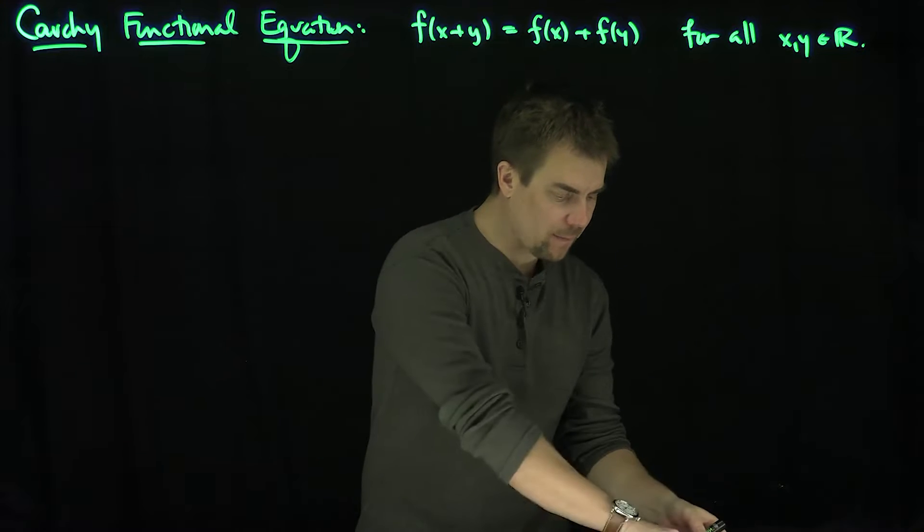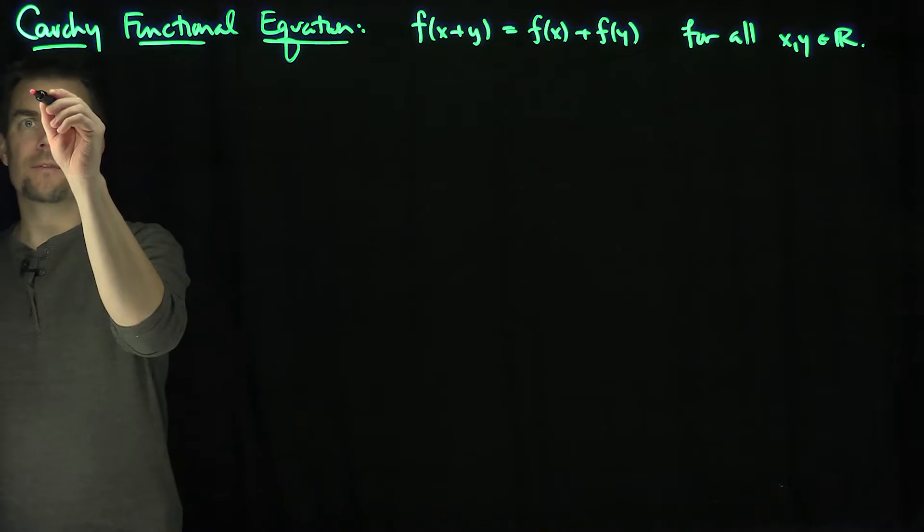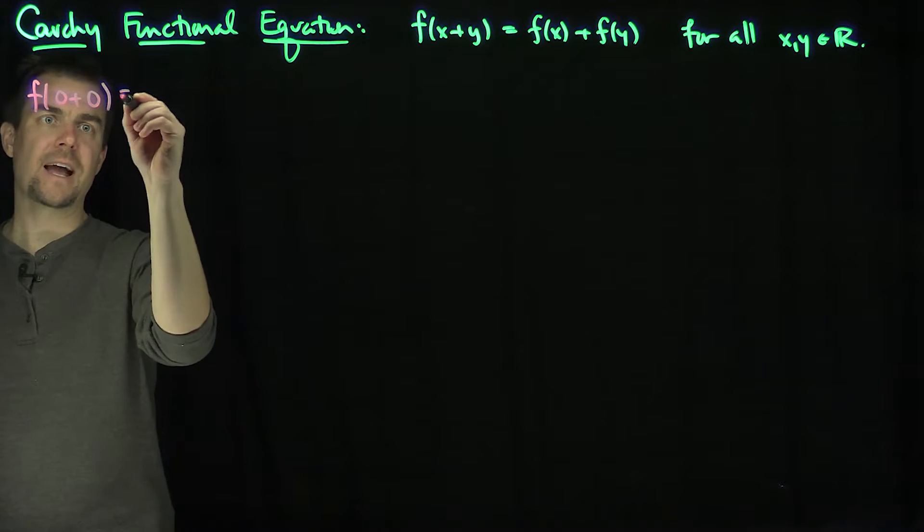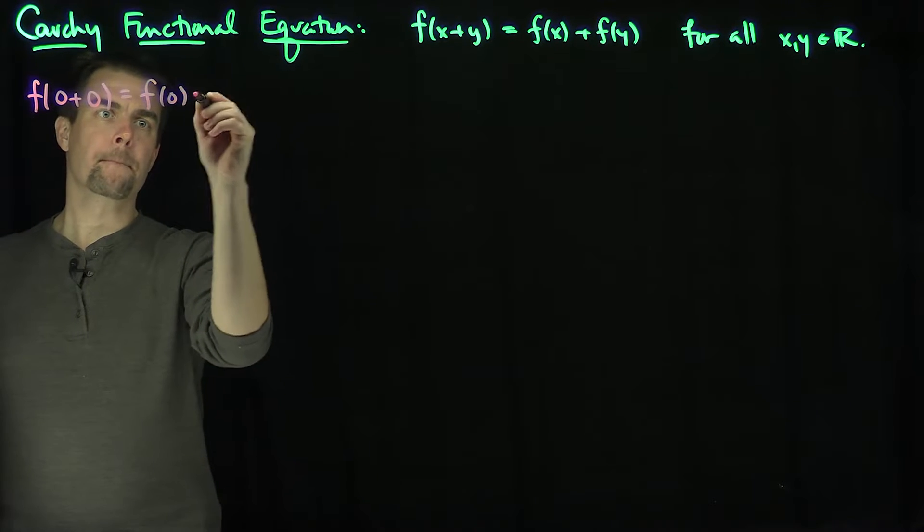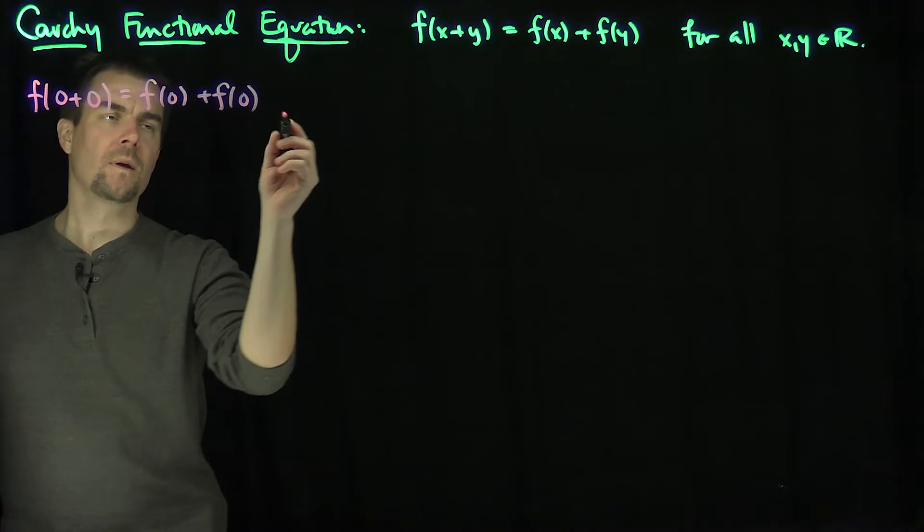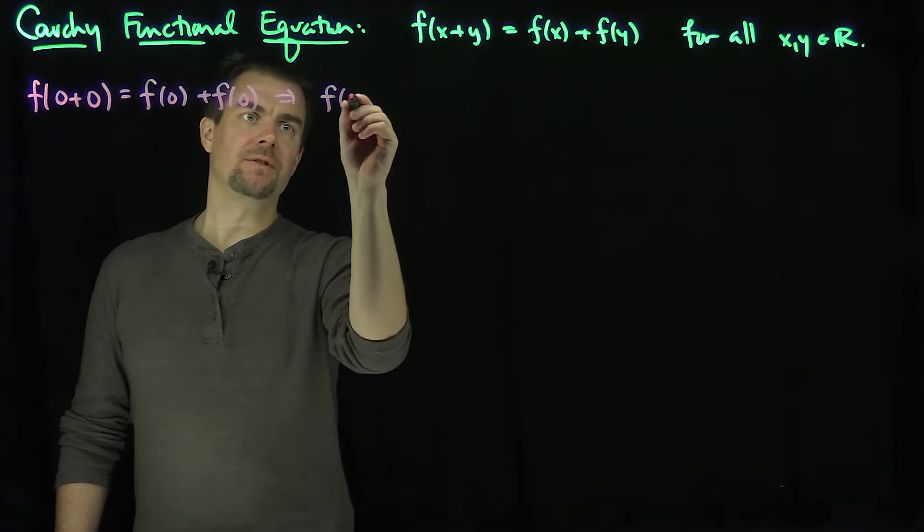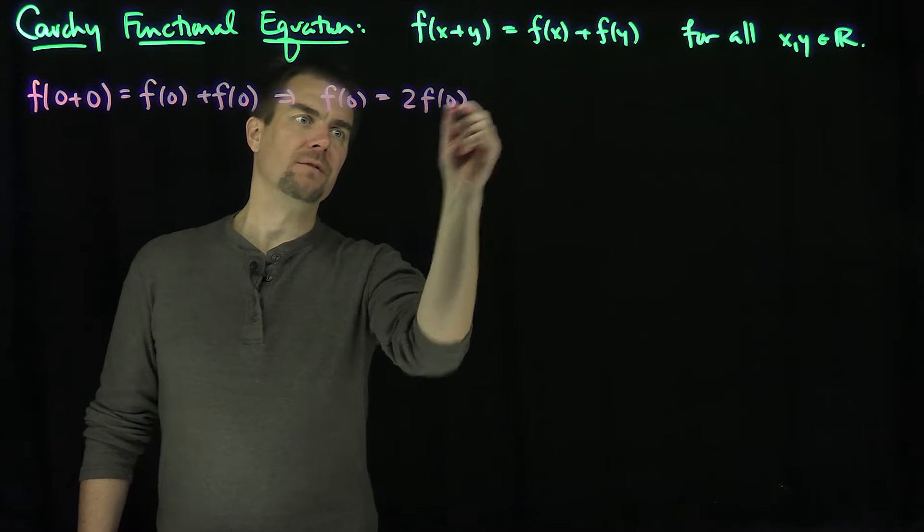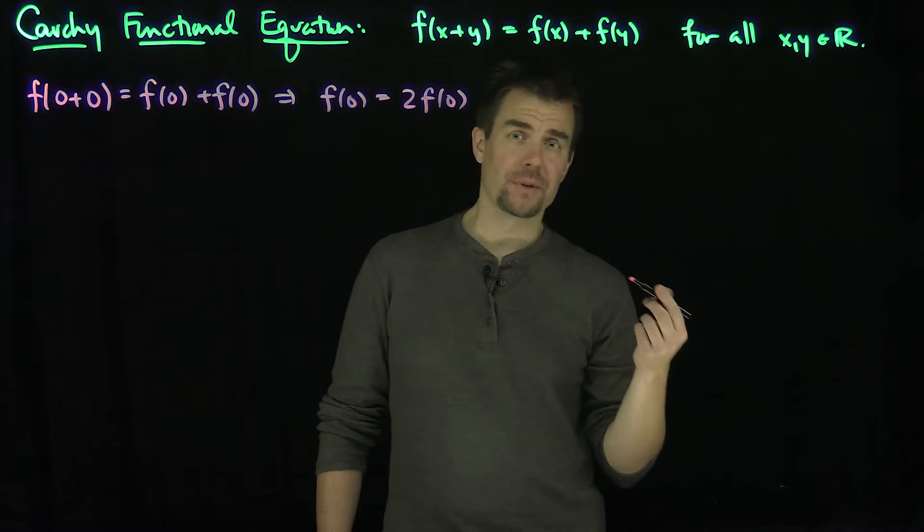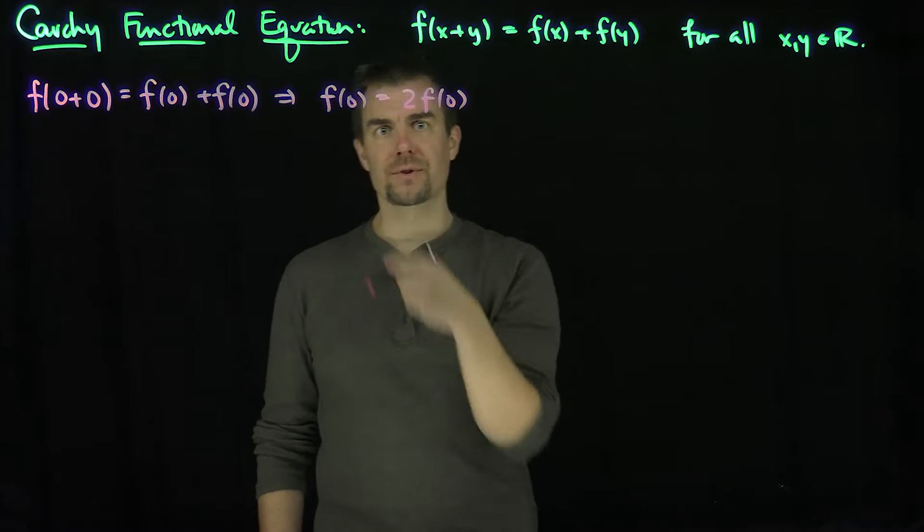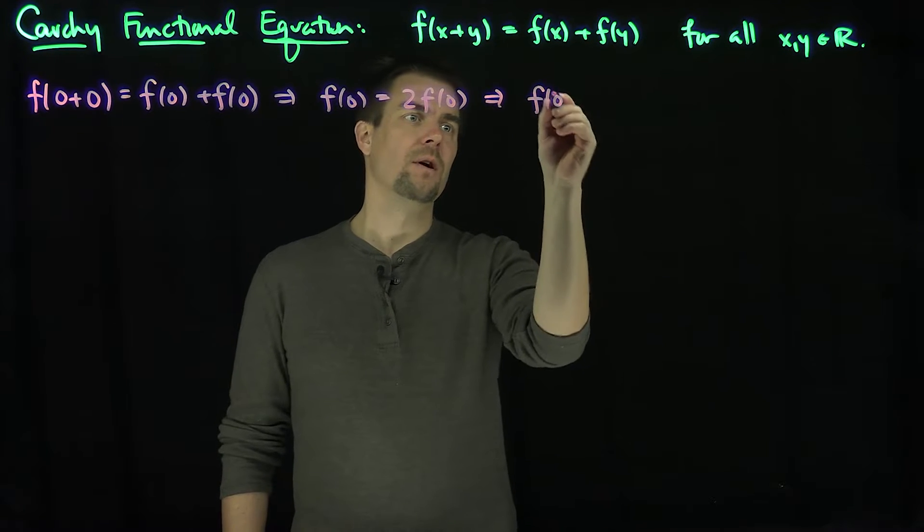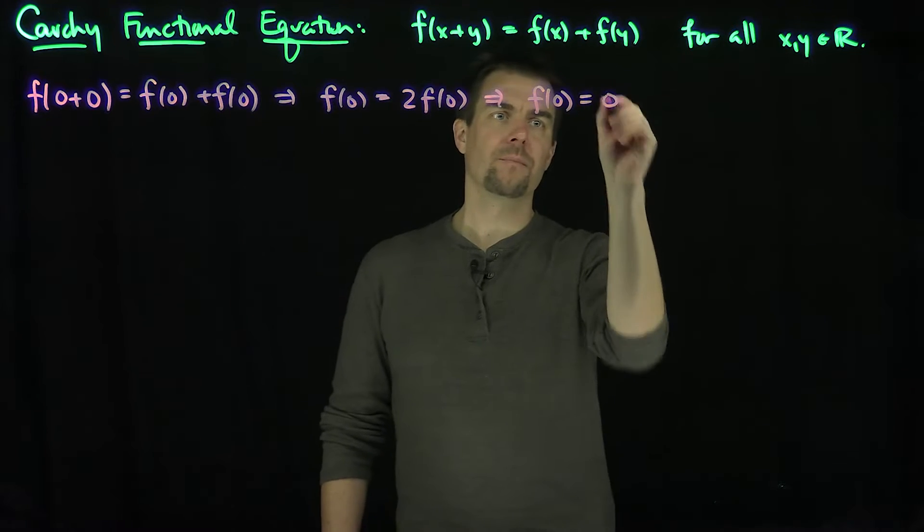The first thing it automatically gives us—it gives us two things for free. The first thing is that if I plug in zero for both x and y, I get the relationship that f(0) on the left-hand side is equal to twice f(0), which forces f(0) to be zero. Because 2f(0) = 0, the only way that's possible is if f(0) is zero. So f(0) has to be zero by the zero product principle.